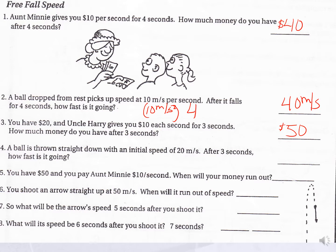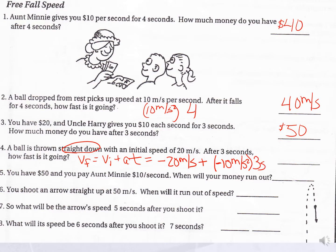The same thing applies when looking at final velocity. A ball is thrown straight down with an initial velocity of 20 meters per second. After 3 seconds, how fast is it going? Our initial speed is 20, but it's going downward, so that's negative 20 meters per second. Plus our acceleration due to gravity, which acts downward — so negative 10 — for 3 seconds. Negative 10 times 3 gives negative 30. Adding that to negative 20, we get negative 50 meters per second.